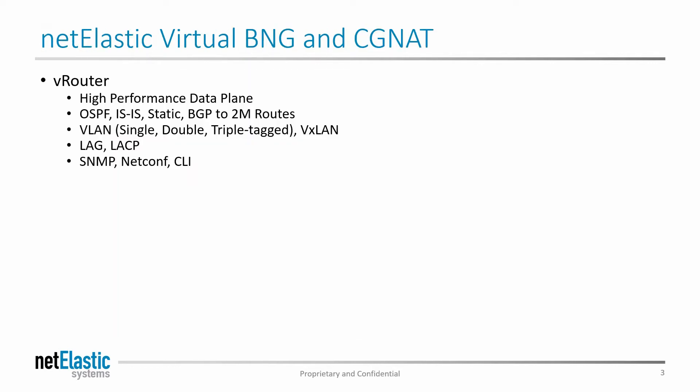But first, let's take a look at the Netelastic virtual BNG and CGNAT solutions. The Netelastic BNG and CGNAT solutions are built on Netelastic's high-performance virtual router. The virtual router provides the high-performance data plane as the basis for all the rest of the functionality. It supports all of the internet network protocols that carriers and service providers rely on, including BGP, up to 2 million routes to support full route tables for peering and transit routers.